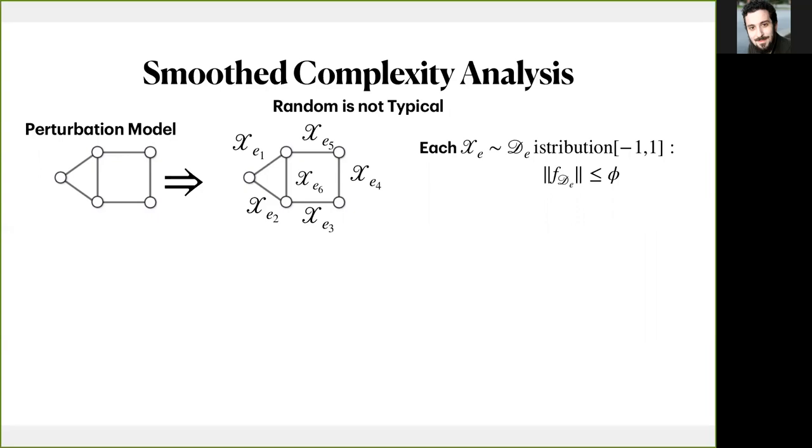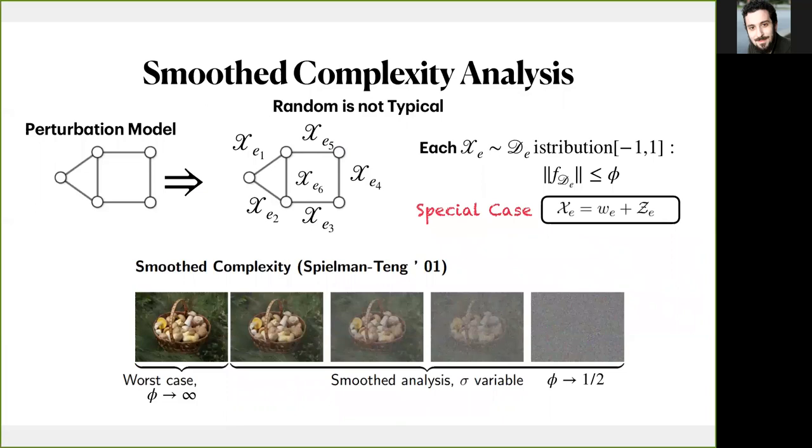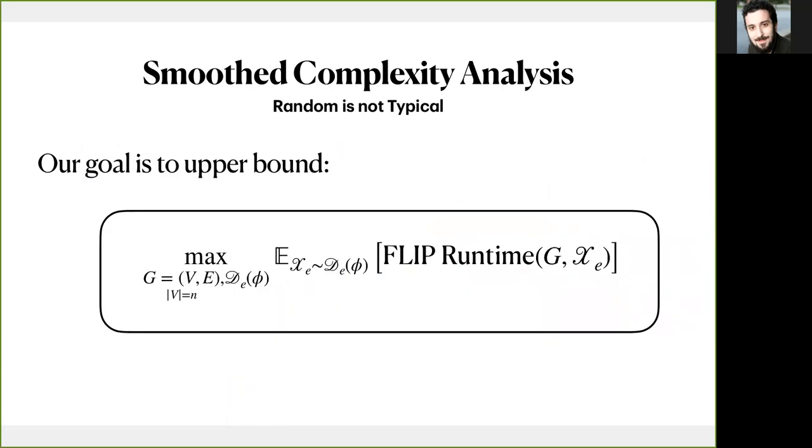First of all, notice that we respect fully the structure of the graph. We don't add any new edges at all. Secondly, notice that the special case of this model is when the adversary picks arbitrary weights which then are perturbed by adding a small random noise, where here phi is something like the inverse of the variance of the noise. Finally, while phi goes to infinity, we allow very concentrated distributions close to the worst-case analysis. The other edge case of one half corresponds to the uniform distribution and the average case.